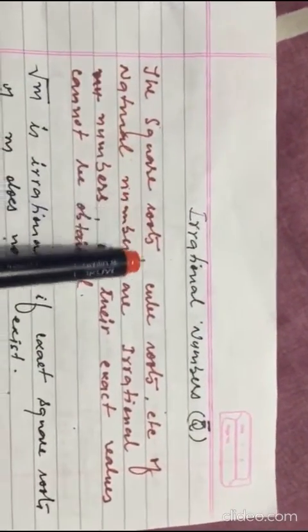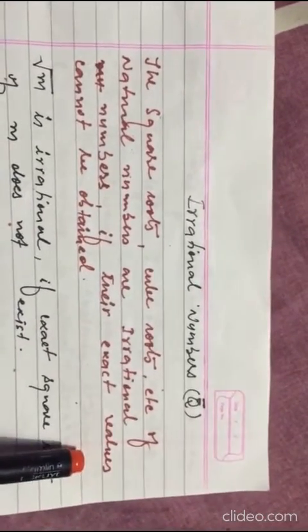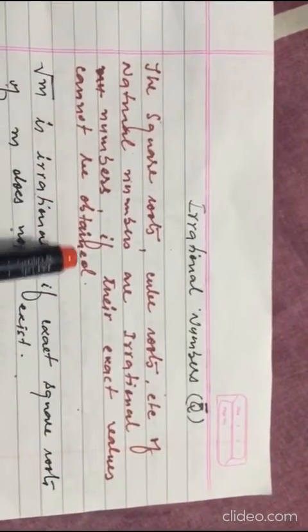Irrational numbers, denoted by q bar. The square root, cube roots, etc., of natural numbers are irrational numbers if their exact values cannot be obtained.